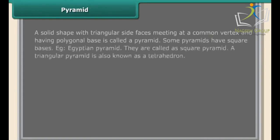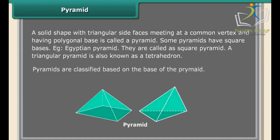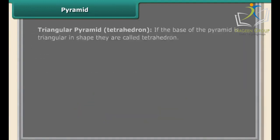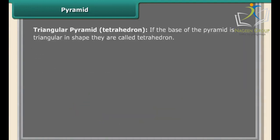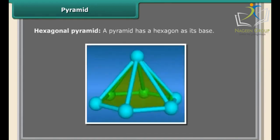A solid shape with triangular side faces meeting at a common vertex and having a polygonal base is called a pyramid. Some pyramids have square bases, such as the Egyptian pyramids, called square pyramids. A triangular pyramid is also known as a tetrahedron. Pyramids are classified based on their base: triangular pyramid (tetrahedron), square pyramid, and hexagonal pyramid.